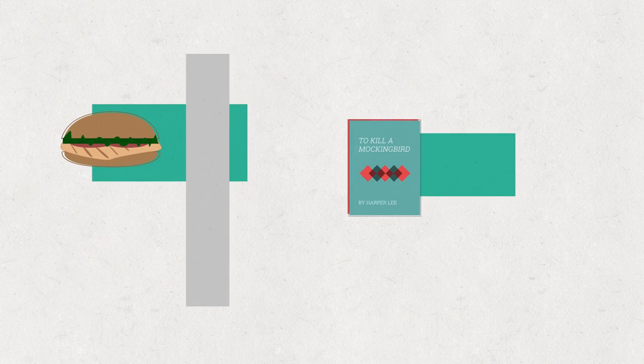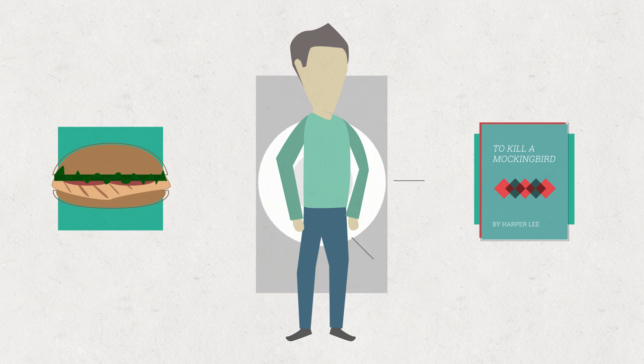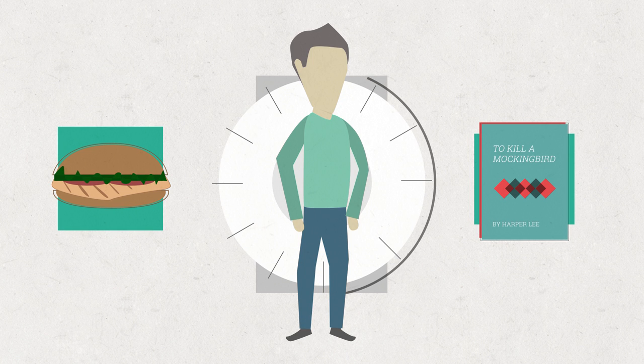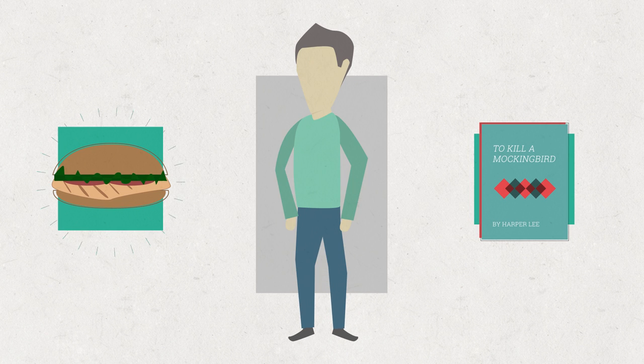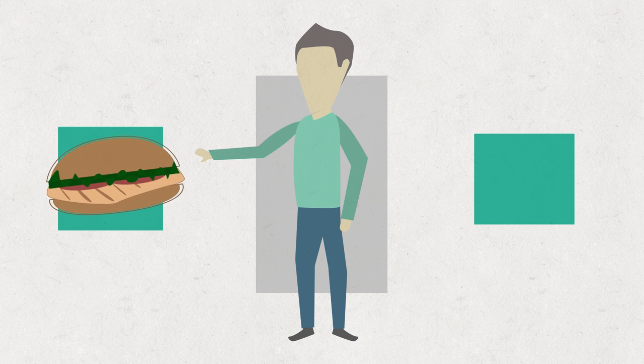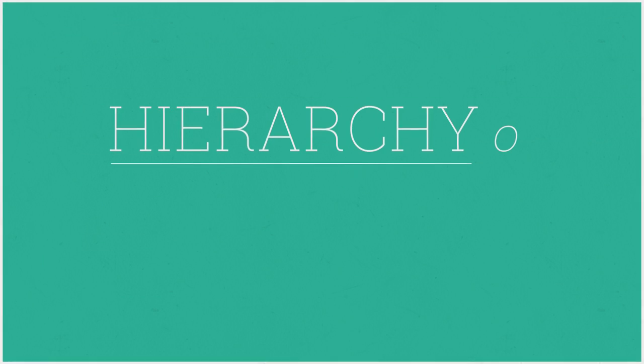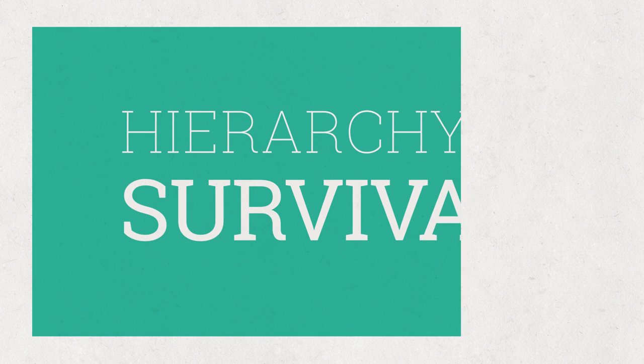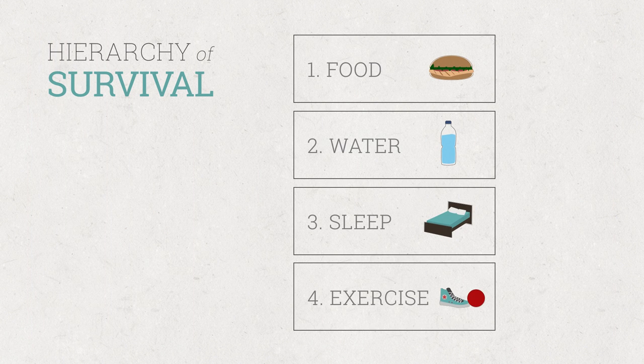The brain does this so it can recognize which is more important. So if you go two days without reading a book, or two days without eating food, your body is going to crave the food over the book. As such, your brain creates what's called a hierarchy of survival, which ranks how important each of these things is to your survival.